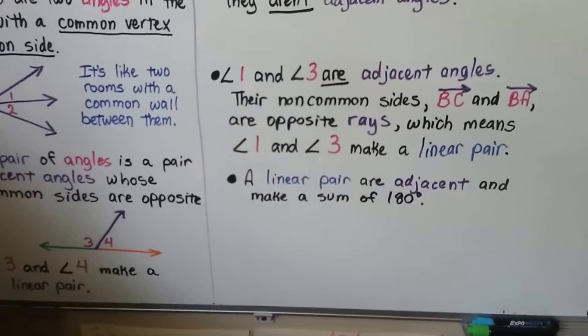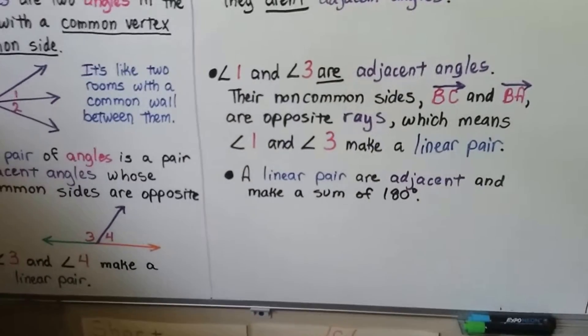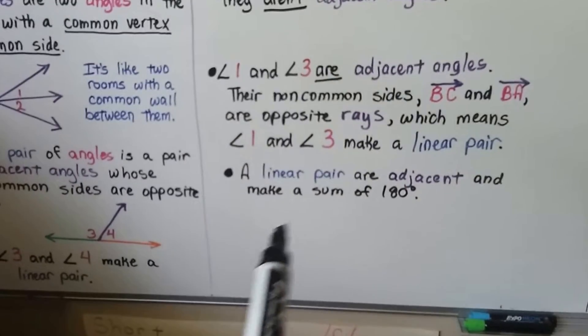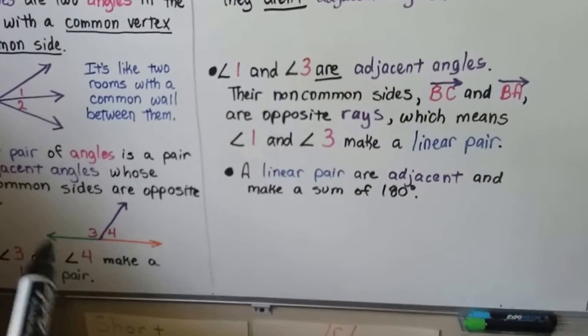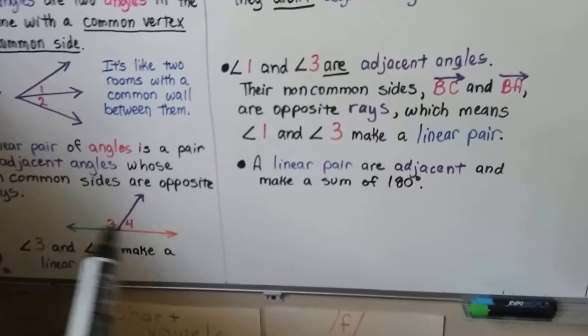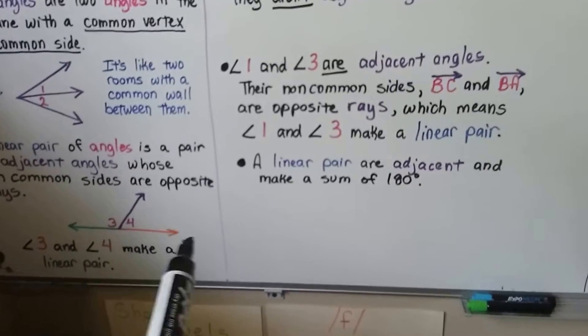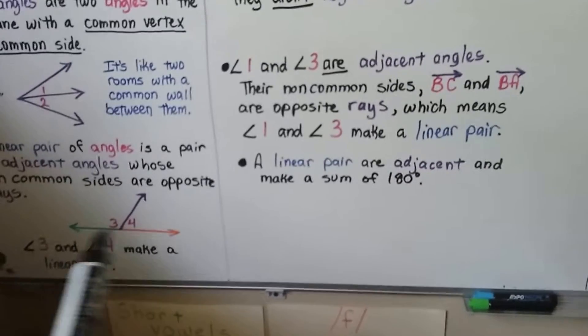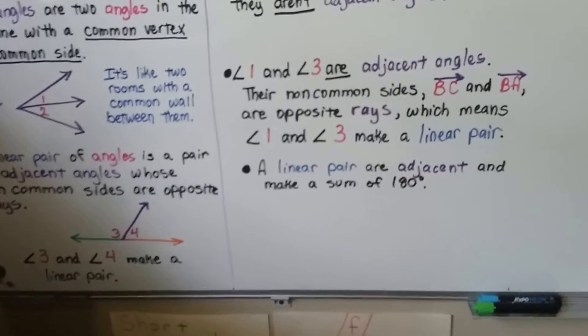A linear pair is adjacent and the angles make a sum of 180 degrees — like a straight angle, which is 180 degrees.